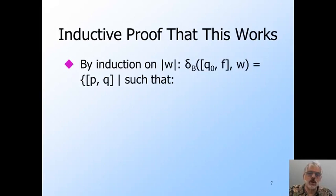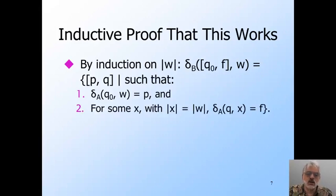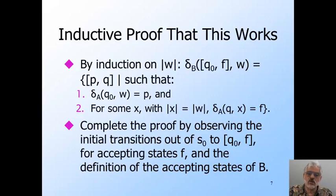Okay, the inductive hypothesis, which we prove by induction on the length of input W, is that B goes on input W from one of its states Q0F, where Q0 is the start state of A and F is one of A's accepting states, to all those states PQ such that A goes from Q0 to P on input W, and A also goes from Q to F on some input X of length equal to that of W. Once we have the inductive proof, we have only to observe how B makes epsilon transitions from its own start state to each of the states Q0F, and that B's accepting states are the ones with the same state of A for both components.